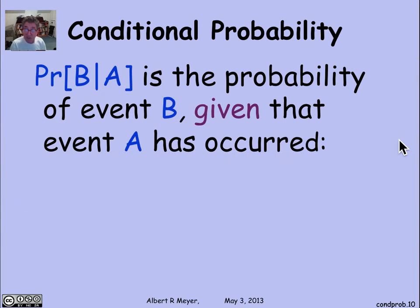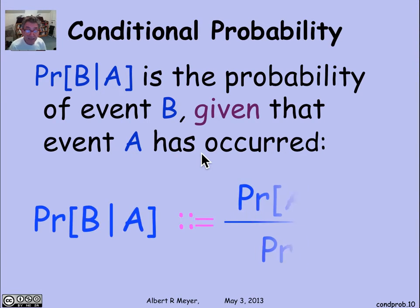So all of the previous discussion was motivation of the following definition. If A and B are events in a probability space, the probability of B given A is defined to be the probability that A and B occur, that is A intersection B, relative to the probability of A. So that's the formal definition. So this formal definition justifies the product rule by definition, because you just multiply both sides by the probability of A. And you get probability of A times the probability of B given A is the probability of the intersection.